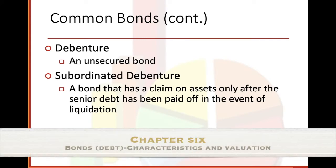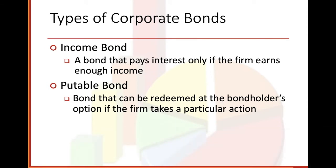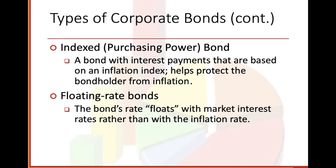There's debenture — an unsecured bond. Subordinated debenture: a bond that has a claim on assets only after the senior debt has been paid off in the event of liquidation — meaning to sell all the assets. Types of corporate bonds: income bond — a bond that pays interest only if the firm earns enough income. Putable bond — a bond that can be redeemed at the bondholder's option if the firm takes a particular action. Indexed or purchasing power bond: a bond with interest payments based on an inflation index that helps protect the bondholder from inflation.